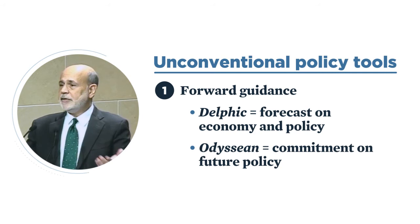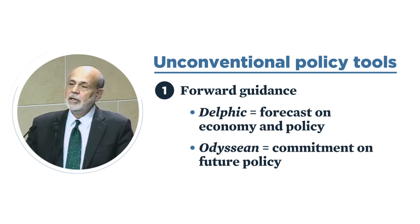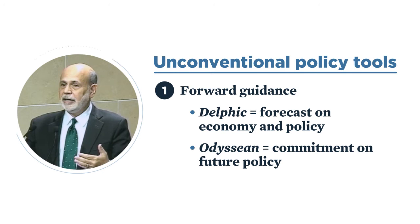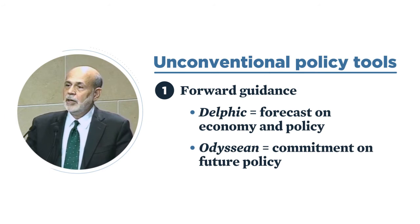There have been a number of examples of this. The Fed used thresholds for its rate policy in the recent recovery, saying it was not going to raise rates at least until unemployment and inflation met certain criteria. Despite the fact that forward guidance has been developed on the fly and in an ad hoc way, it has been effective. The literature suggests it has affected both market rates and forecasters' expectations of how the economy will evolve.